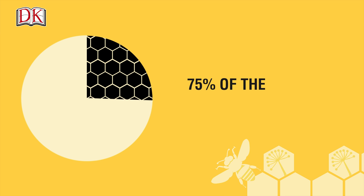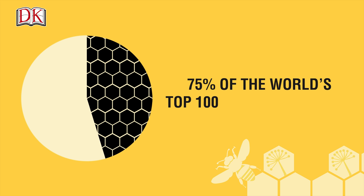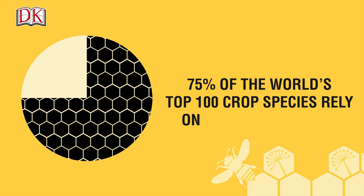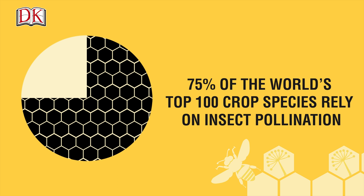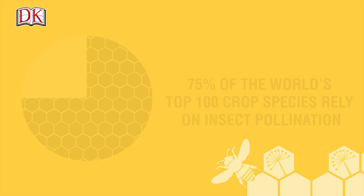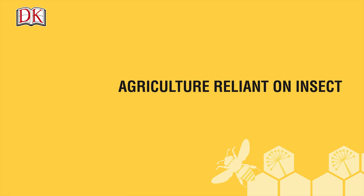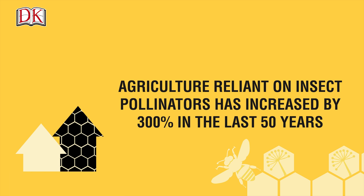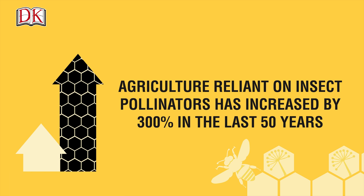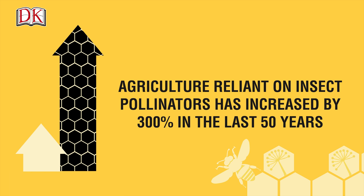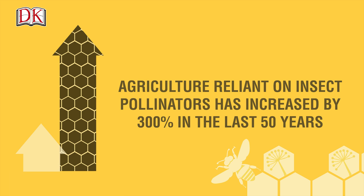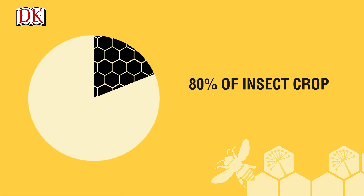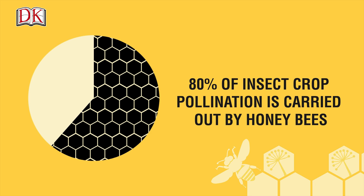75% of the world's top 100 crop species rely on insect pollination. In fact, over the past 50 years, agriculture relying on insect pollinators has tripled. 80% of this is carried out by bees.